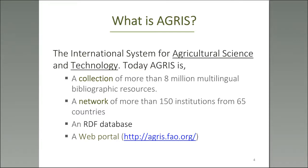So what can we say about AGRIS? AGRIS is an international system for agricultural science and technology. Today it is a collection of more than 8 million multilingual bibliographic resources, having grown from a small core collection. AGRIS can also be considered as a network of more than 150 institutions from 65 countries. Those who contribute metadata of their research and output become part of the network — you can also call them the AGRIS network.